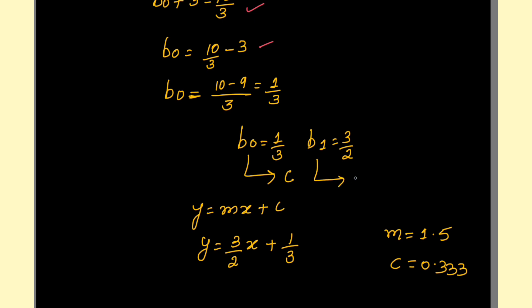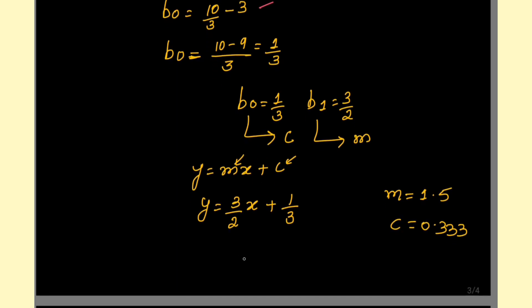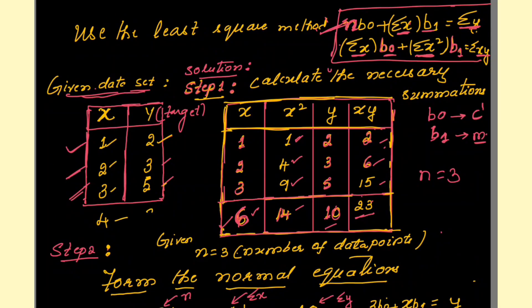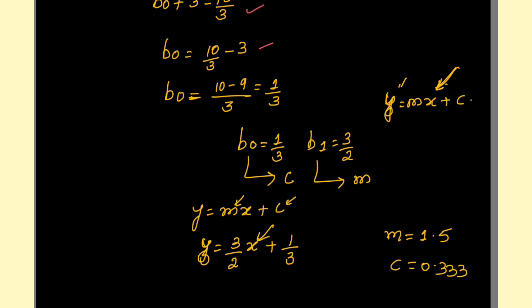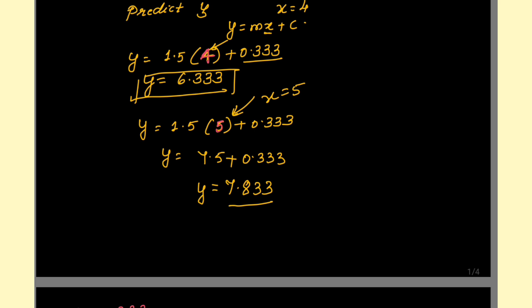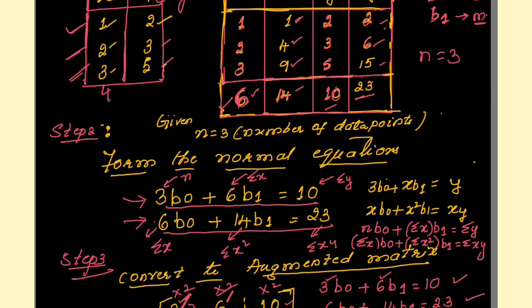b0 is your c and b1 is your m. We wanted the values for c and m, and once we have them, we can predict the value for any x. For example, if x = 4: y = mx + c = 1.5 × 4 + 0.33 = 6.333. If x = 5: y = 7.833. So for x = 4, y = 6.333 and for x = 5, y = 7.833.